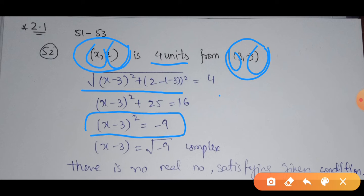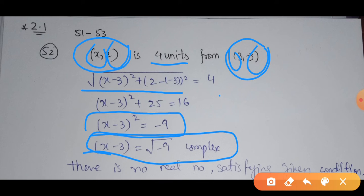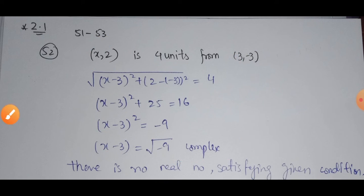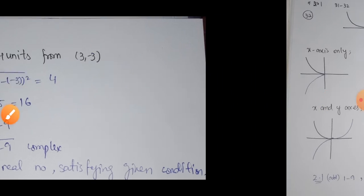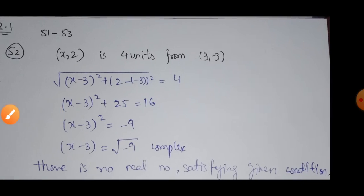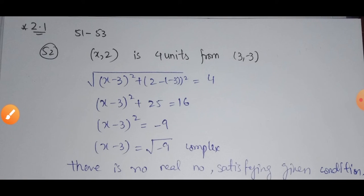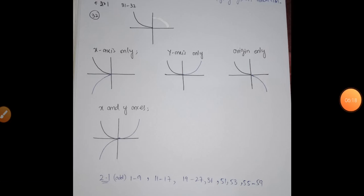Simplifying this equation, we get (X minus 3) whole square equals minus 9. Taking the square root on both sides, we obtain a complex number. This means there is no real number which is going to satisfy the required condition.